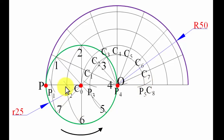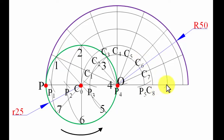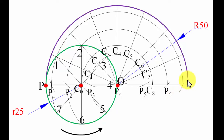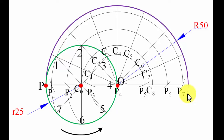With C6 as center and arc of 25 mm through point 6, we get P6. With C7 as center and arc through point 7, we get P7. Finally with C8 as center, the arc just touches the arc again, giving the final point P8. You can clearly see all these points P0 through P8 have lined up.